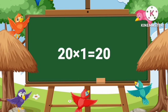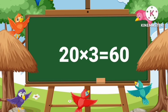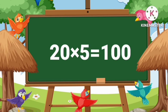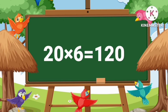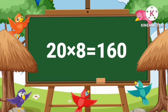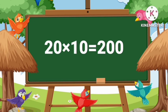Twenty ones are twenty. Twenty twos are forty. Twenty threes are sixty. Twenty fours are eighty. Twenty fives are one hundred. Twenty sixes are one hundred twenty. Twenty sevens are one hundred forty. Twenty eights are one hundred sixty. Twenty nines are one hundred eighty. Twenty tens are two hundred.